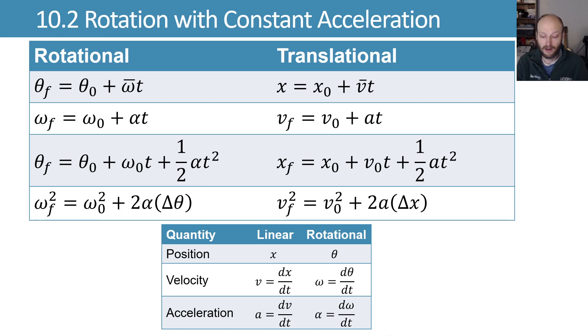Just like we were able to consider constant acceleration motion in translational motion, if we have constant angular acceleration, we can consider constant angular acceleration and get the same relationships just with our angular quantities. So instead of x equals x naught plus v bar t, we have theta is equal to theta naught plus omega bar t, and so forth for all of these relationships.